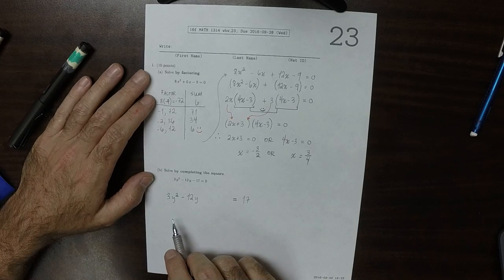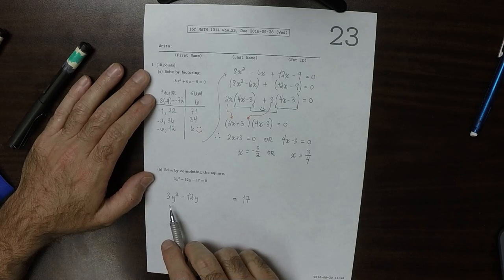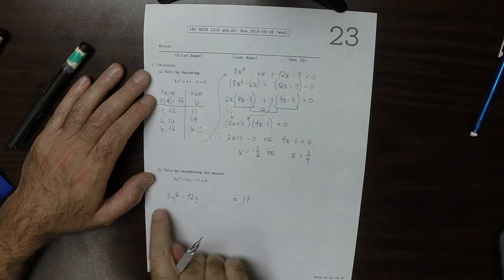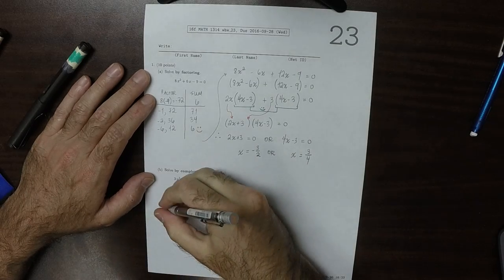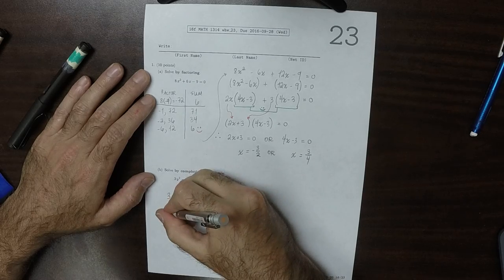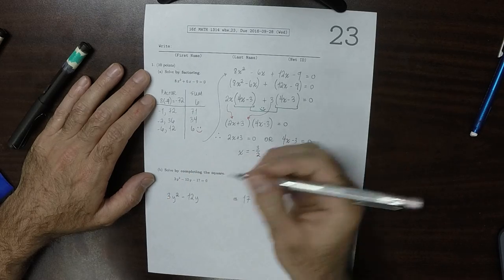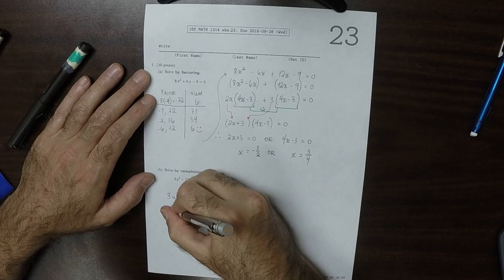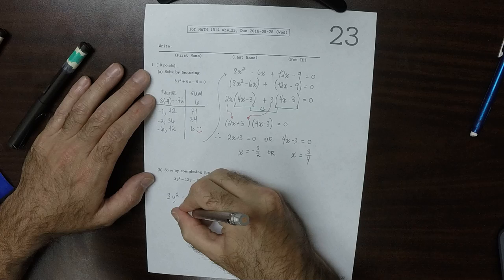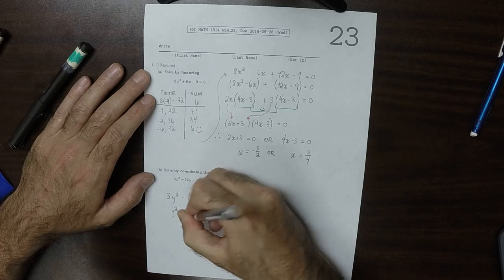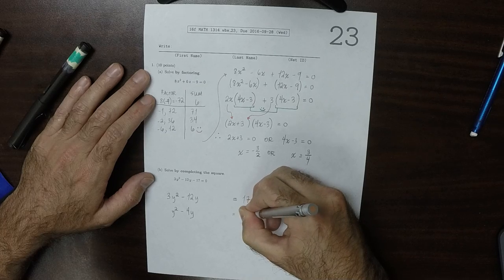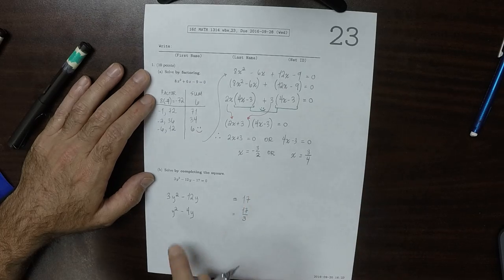Now, to complete the square, we need the leading coefficient to be 1, which is to say we need this to be monic. So we'll divide by 3, to obtain y squared minus 4y is 17 over 3. So now it's monic.